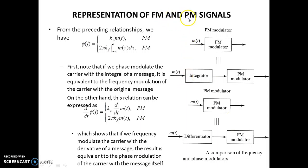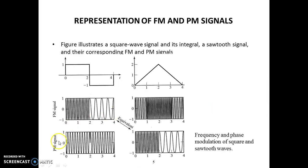When we give M(t) and integrate it into a PM modulator, it becomes an FM modulator. When we give M(t) to a differentiator followed by an FM modulator, it becomes a PM modulator. This demonstrates the relationship between FM and PM signals.